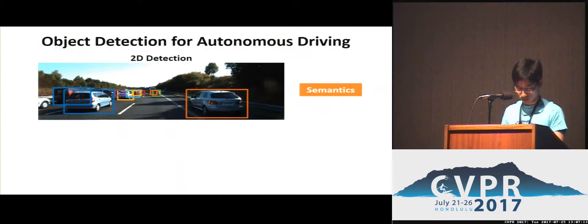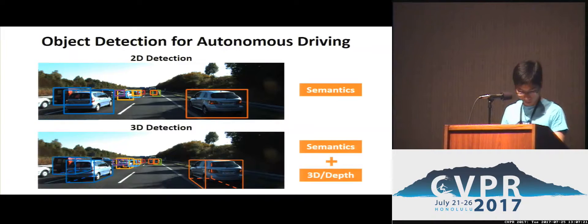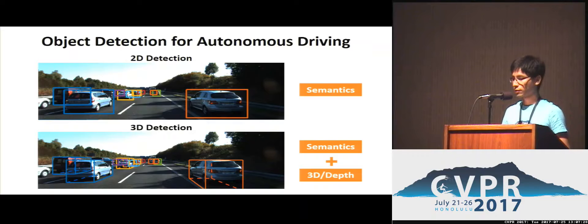Most object detection research predicts 2D bounding boxes of objects. Such tasks only output semantics of objects and are not enough for autonomous driving. In our work, we recover the 3D bounding boxes of objects in order to provide both semantics and 3D information to self-driving cars.